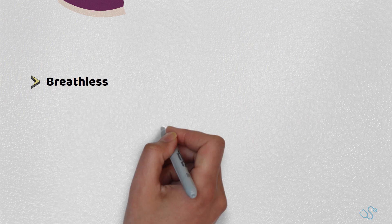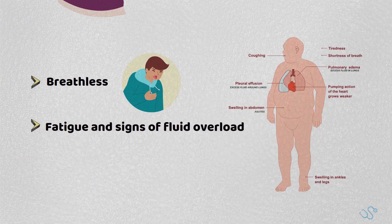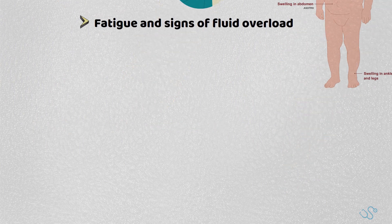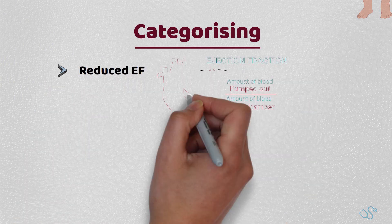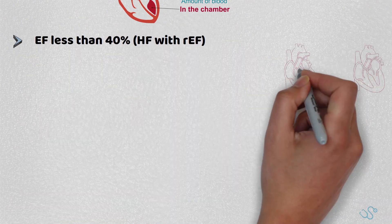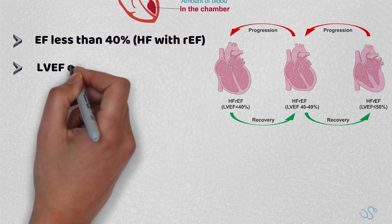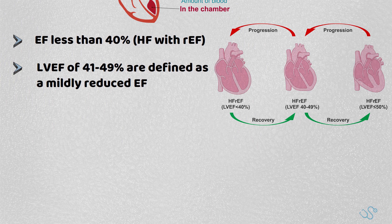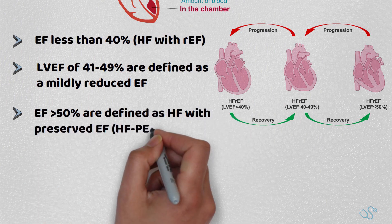Heart failure is essentially a syndrome of breathlessness, fatigue and signs of fluid overload in the context of a structural or functional abnormality in the heart causing rising intracardiac pressure or inadequate cardiac output. Furthermore, heart failure can be defined by ejection fraction, with reduced ejection fraction defined as anyone with an ejection fraction less than 40%. Those with a left ventricular ejection fraction of 41 to 49% are defined as mildly reduced ejection fraction, and those with signs and symptoms of heart failure but with an ejection fraction above 50% are defined with heart failure with preserved ejection fraction.